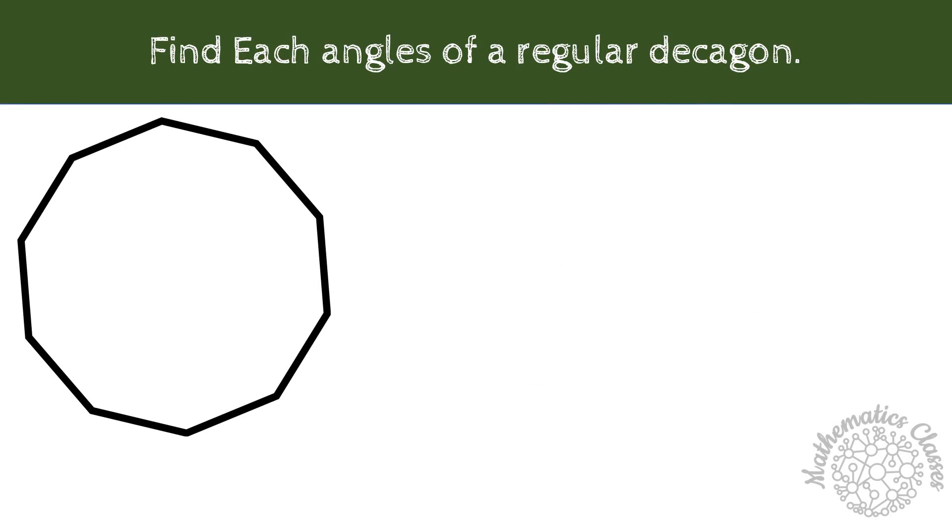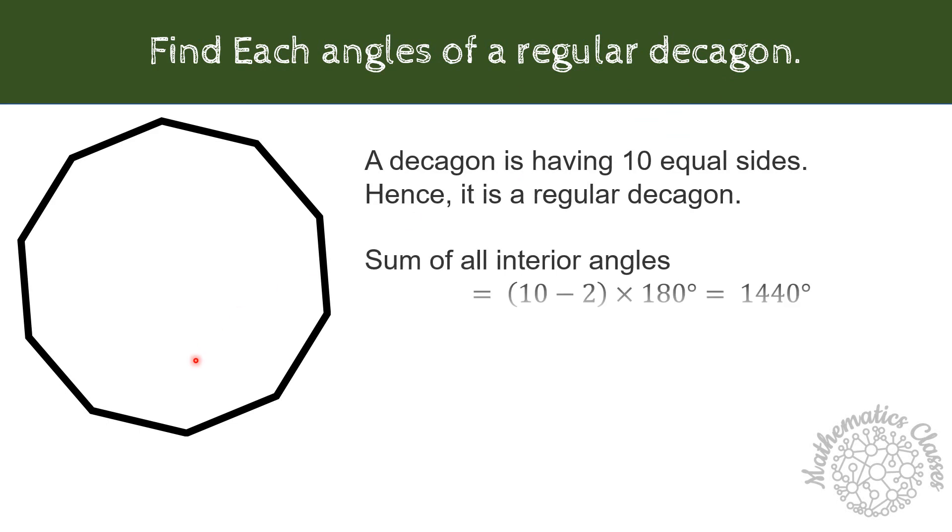We can also solve few tricky questions as well. Find each interior angles of a regular decagon. We know that a decagon is made up of 10 sides. So, the sum of the interior angles of a polygon equal to 10-2 into 180 which is equal to 1440. Since, all angles are equal, we can divide this whole angle into 10 equal parts. So, each angles would be equal to 1440 divided by 10 equal to 144 degree.